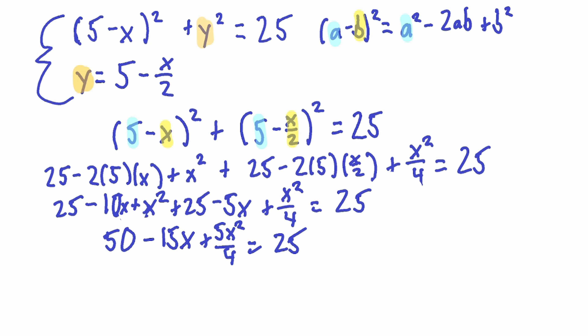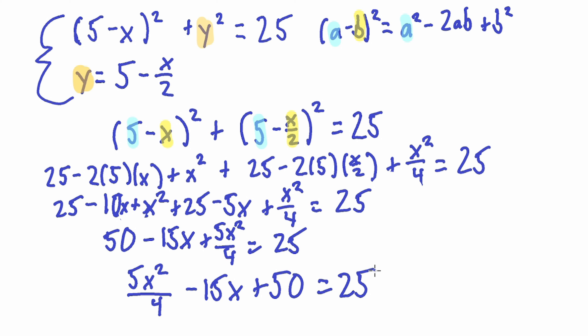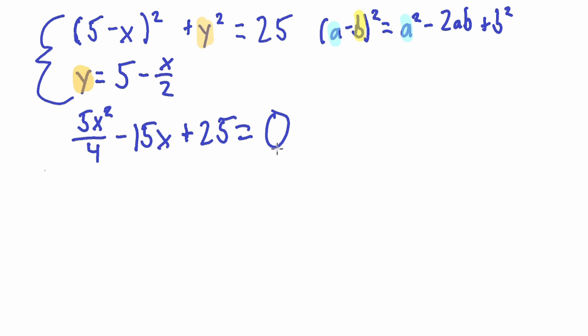Rewriting with the squared term first: 5x squared over 4 minus 15x plus 50 equals 25. To factor for x we want zero on the right side, so subtract 25 from both sides: 50 minus 25 is 25. The equation set to zero is: 5x squared over 4 minus 15x plus 25 equals 0.